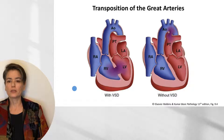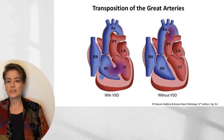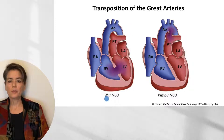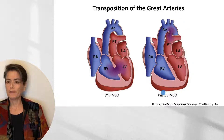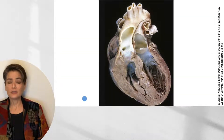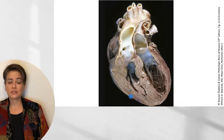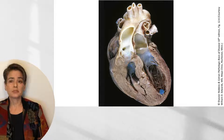Here we have an example with a ventricular septal defect, which allows communication between the two parallel circulations, maintaining life. Deoxygenated blood supplies the systemic circulation, leading to the infant's cyanosis, and the right ventricle undergoes hypertrophy because it is pumping against systemic blood pressure. Here's an example without a VSD but with a patent ductus arteriosus — again, explaining the cyanosis and right ventricular hypertrophy. Looking at an actual specimen, you can see right ventricular hypertrophy that looks about the thickness of a left ventricular wall, while the left ventricular wall is hypoplastic, resembling a normal right ventricle. You can also see the aorta arising from the right ventricle.